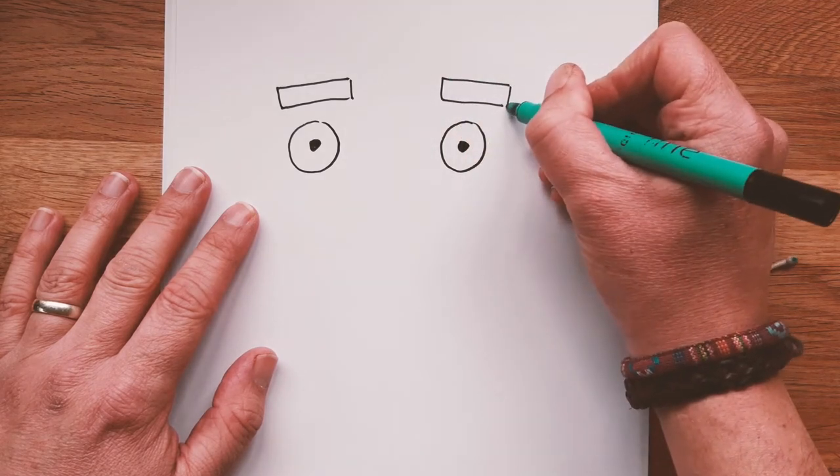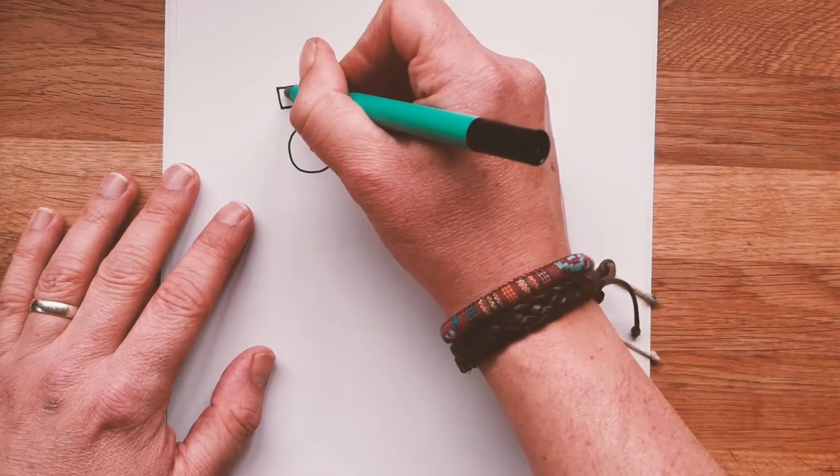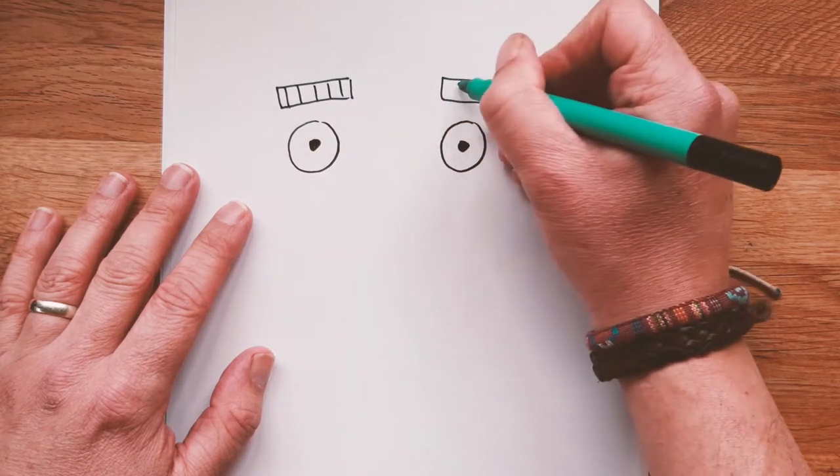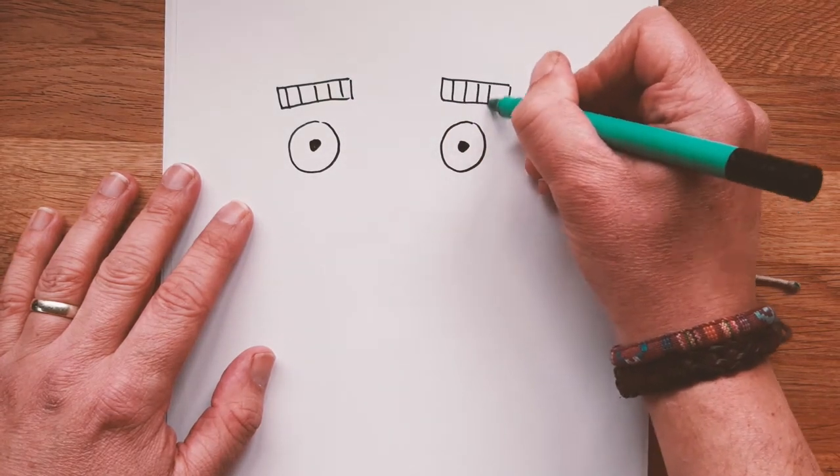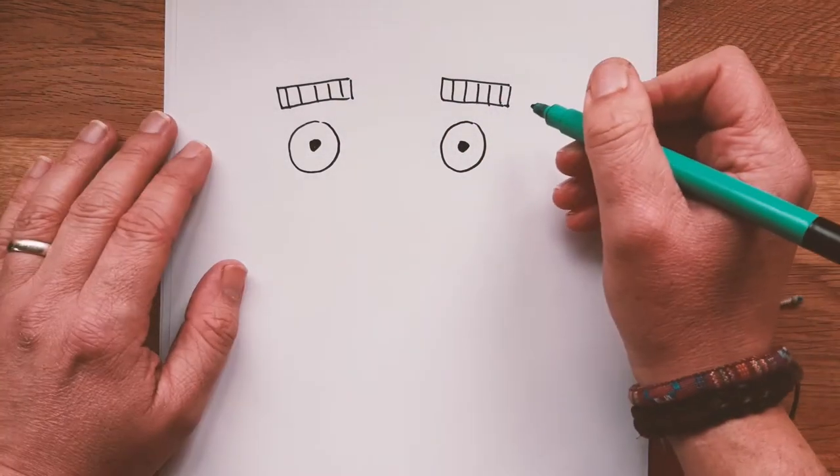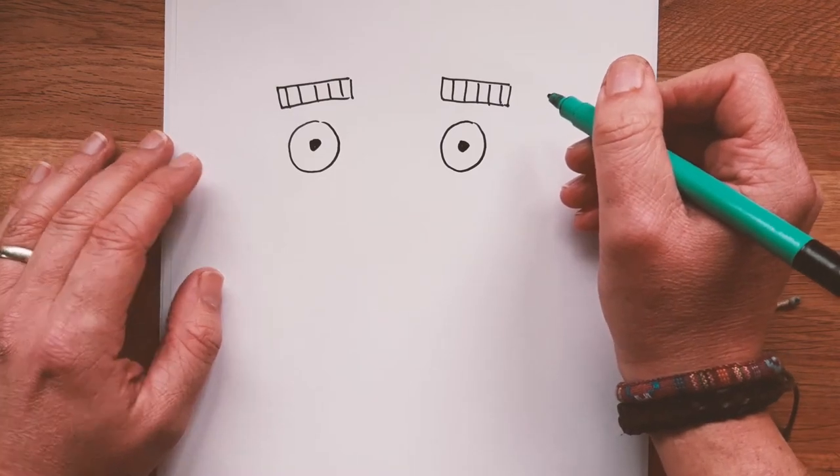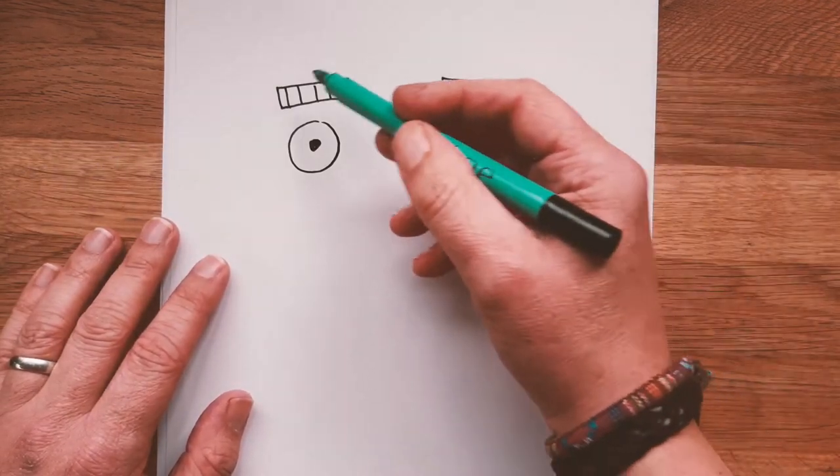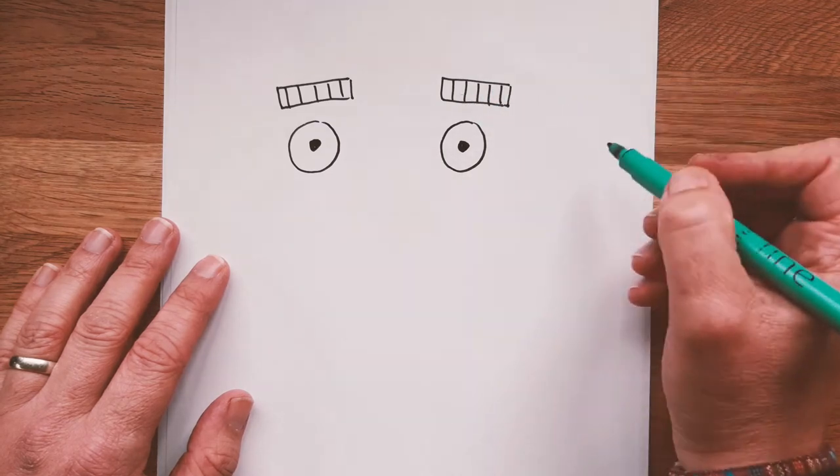So eyebrows are a good way of telling if someone's happy, sad or bored or excited and his eyebrows are going to be quite flat because he's going to look quite starey and expressionless in this picture. So they're basically two rectangles and I draw some stripes in them.